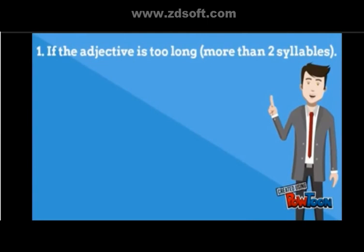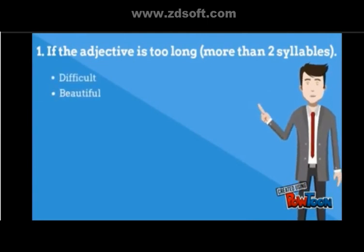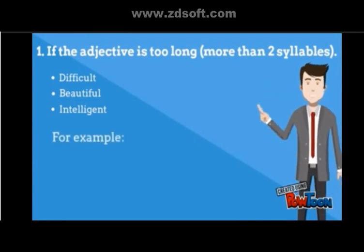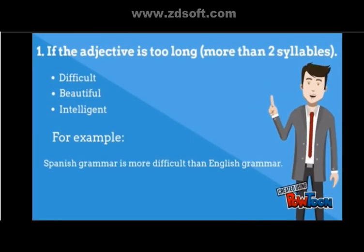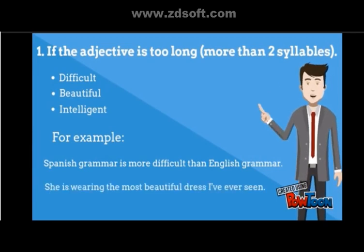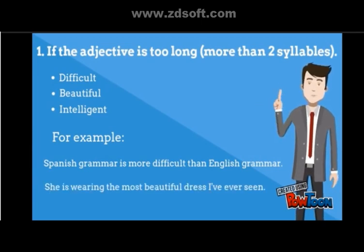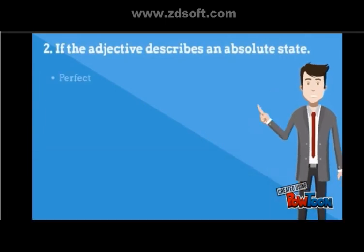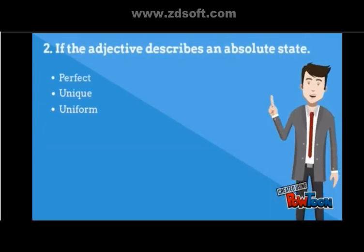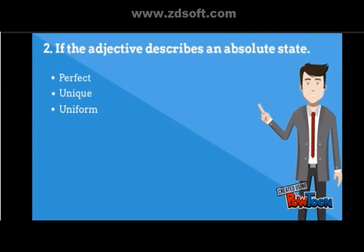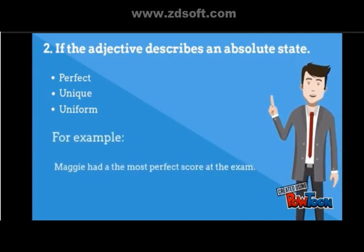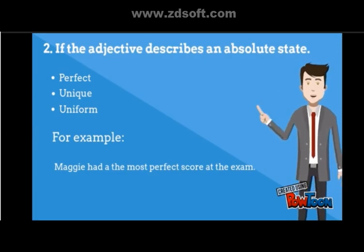First, if the adjective is too long — more than two syllables — then you cannot use the '-er' or '-est' forms. For example: 'She's wearing the most beautiful dress I've ever seen.' Second, if the adjective describes an absolute state, like 'perfect,' 'unique,' or 'uniform,' you cannot use comparatives and superlatives. For example: 'Maggie had the most perfect score at the exam.'